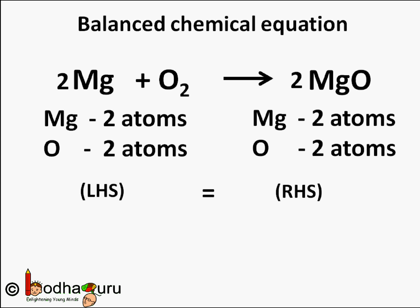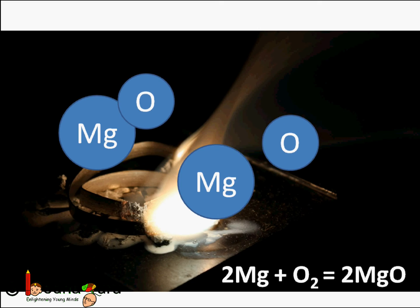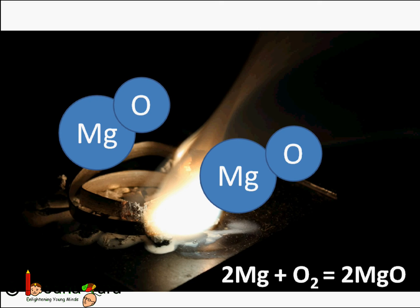Using the trial and error method we are able to balance the given chemical equation: 2Mg + O2 → 2MgO. We can say 2 atoms of magnesium react with 2 atoms of oxygen and form 2 molecules of magnesium oxide, each molecule having 1 atom of magnesium and 1 atom of oxygen.